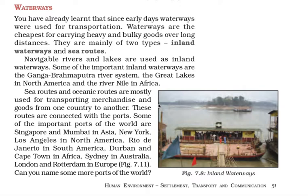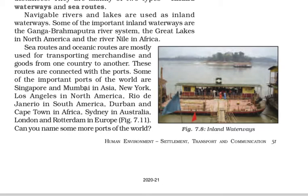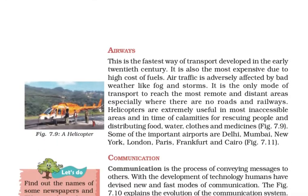Some important inland waterways are the Ganga and Brahmaputra river system, the Great Lakes in North America, and the River Nile in Africa. Sea routes and oceanic routes are mostly used for transporting merchandise and goods from one country to another, and these routes are connected with ports. Some important ports include Singapore and Mumbai in Asia, and New York and Los Angeles in North America.